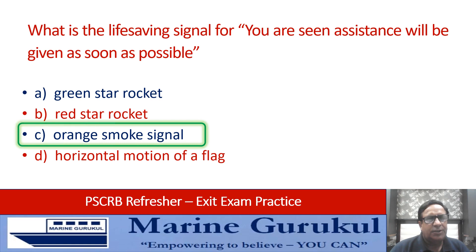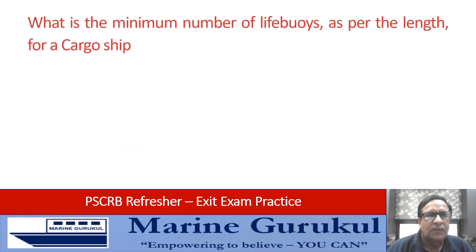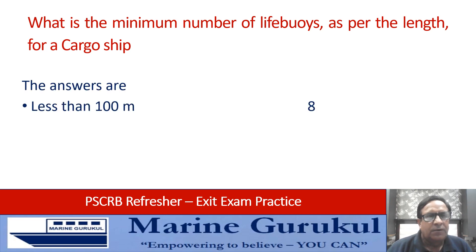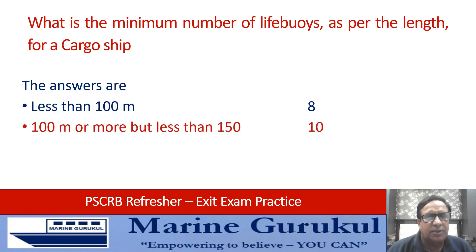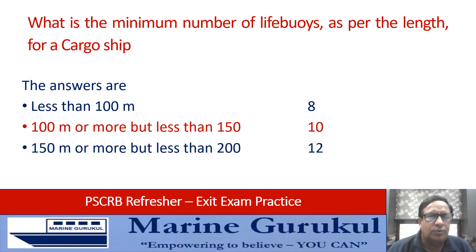What is the minimum number of lifebuoys as per the length of a cargo ship? For less than 100 meters, minimum 8 lifebuoys; between 100 to 150 meters, minimum 10; 150 to 200 meters, minimum 12; and 200 meters or more, minimum 14 lifebuoys.